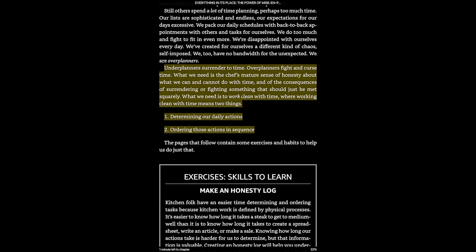What we need is the chef's mature sense of honesty about what we can and cannot do with time. What we need is to work clean with time. Here he's explaining the title of the book — you can see at the very top it's called 'Everything in Its Place,' but the title was actually changed to 'Work Clean,' which is the current title. He's saying 'working clean with time' means two things: determining our daily actions and ordering those actions in sequence. Super clear, very easy to apply to other things, so I'm going to leave that highlighted.